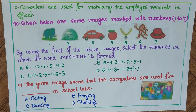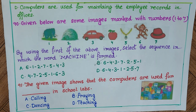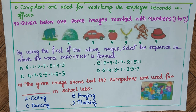Question 91: The given image shows a classroom or computer lab with a teacher and students sitting at computers. This represents computers being used for education. The answer is D. With that we come to the end of this session, covering questions up to 91. More questions will be covered in part 3.